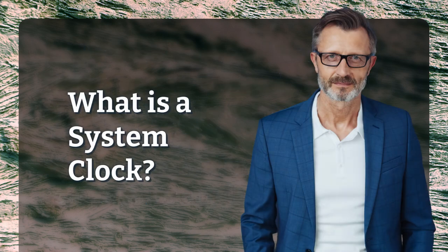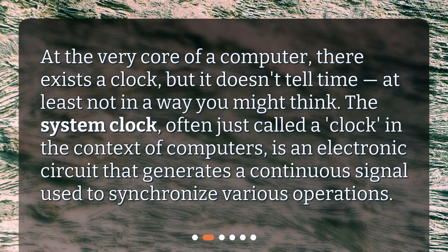What is a system clock? At the very core of a computer, there exists a clock, but it doesn't tell time, at least not in a way you might think. The system clock, often just called a clock in the context of computers, is an electronic circuit that generates a continuous signal used to synchronize various operations.